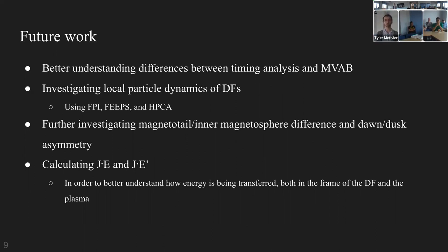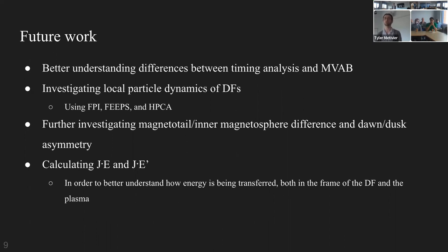Clarification on the eigenvalue calculation: there's an eigenbasis with three eigenvalues. The maximum (L) direction has an enormous eigenvalue, the intermediate has a much smaller one, and the third is normalized to one. So you only need to check that the second eigenvalue is over 5 — it's not more complex than that.